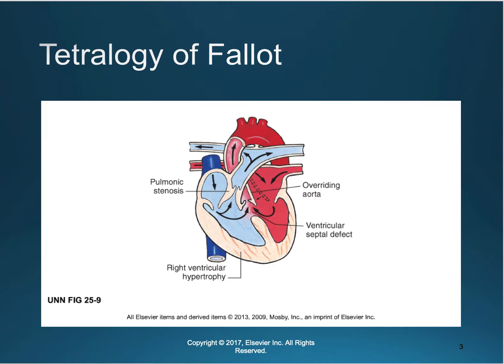Tetralogy of Fallot is marked by four characteristics — 'tetra' means four. It is marked by right ventricular hypertrophy, ventricular septal defects, pulmonic stenosis, and overriding aorta.